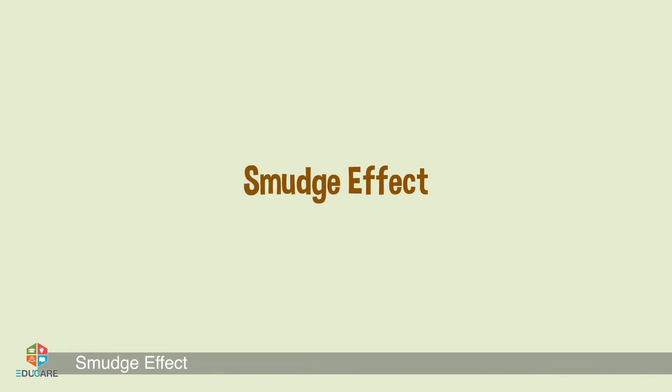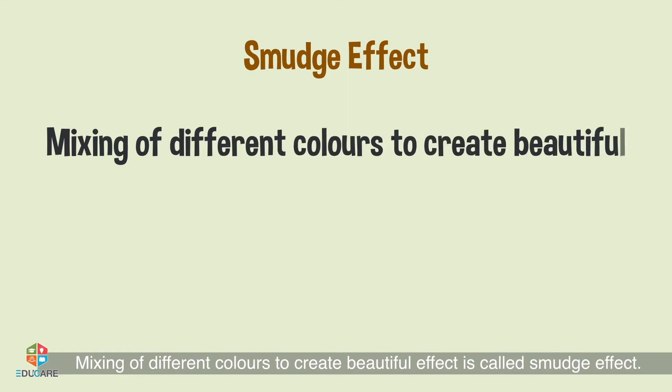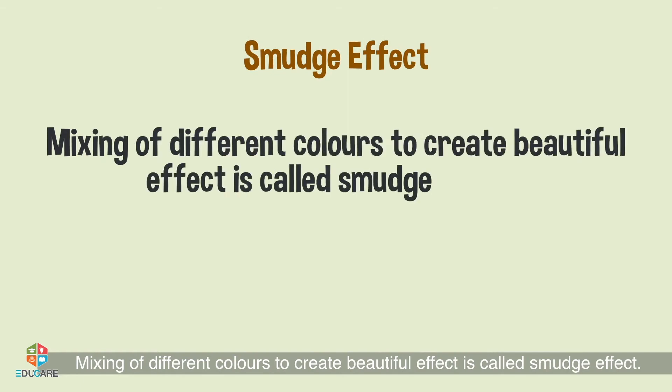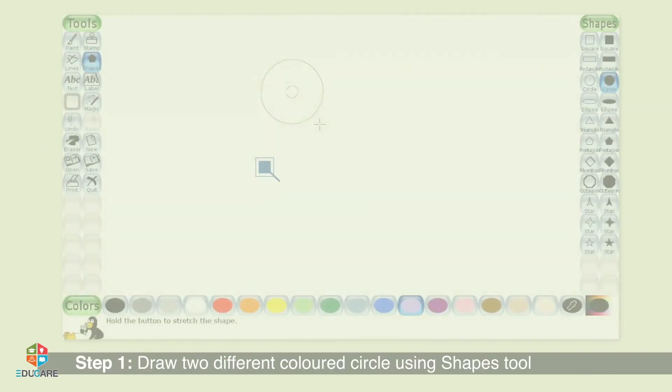Mixing of different colors to create beautiful effects is called smudge effect. Let us learn how to do so. Step 1: Draw two differently colored circles using the shapes tool.